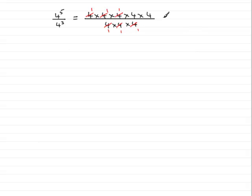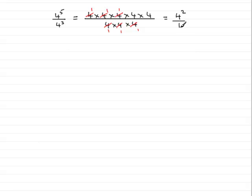Now then, what we have on the top is 1 times 1 times 1, which is 1, times 4 times 4 — in other words, 4 to the power 2, or 4 squared. And on the bottom we have 1 times 1 times 1, which comes to 1. So we have 4 squared divided by 1. Anything divided by 1 we can just omit, so that's just 4 squared, or 16.